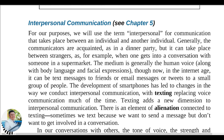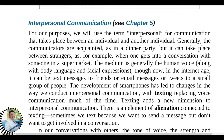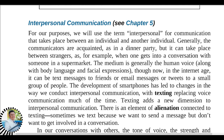Interpersonal communication is the term for communication that takes place between one individual and another individual. Generally the communicators are acquainted, as at a dinner party, but it can also take place between strangers — for example, when one gets into a conversation with someone in a supermarket. The medium is generally the human voice along with body language and facial expressions. However, now in the internet age, it can also be text messages, emails, or tweets to a small group of people. The development of smartphones has led to changes in interpersonal communication, with texting often replacing voice communication.